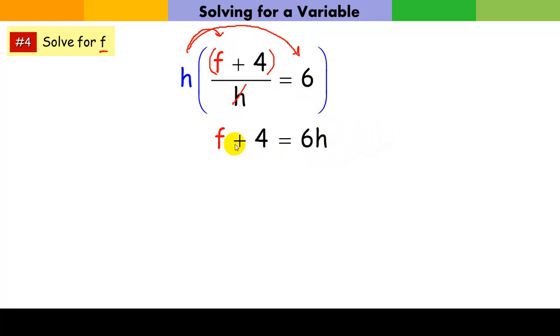Now that I've done that, to get f alone is fairly simple. I just subtract 4 from both sides. Notice I can't combine those. 6h minus 4, that's a variable term and that's a constant term. f is now alone. And it's f equals 6h minus 4. That's what it means to solve for a variable.